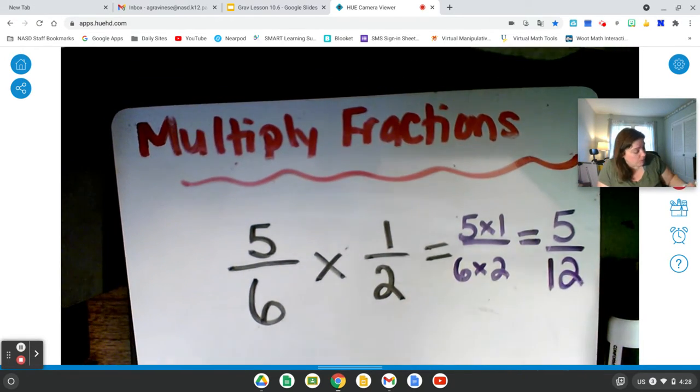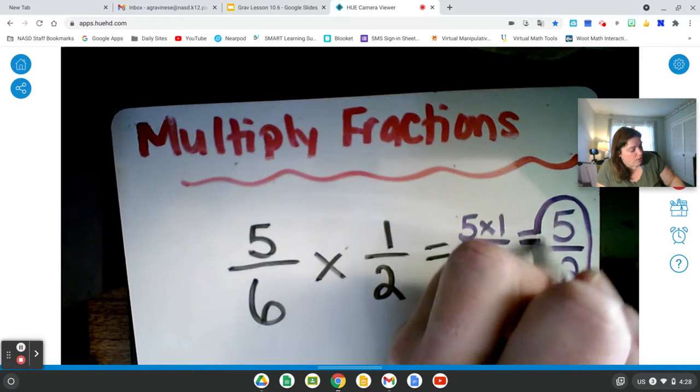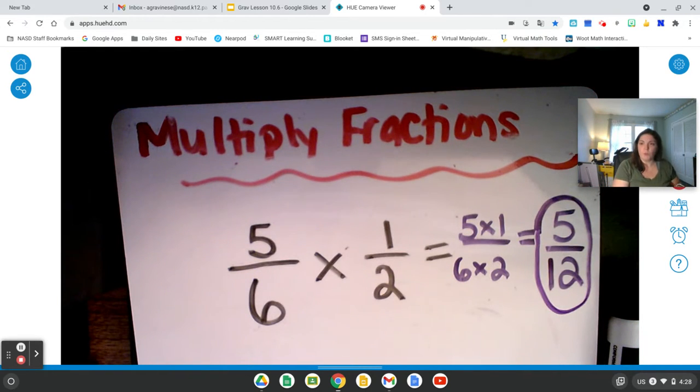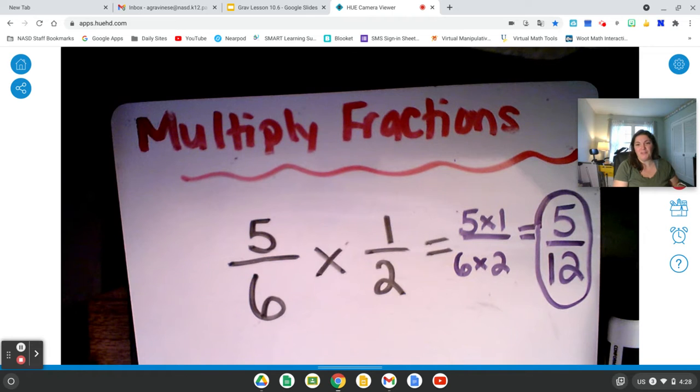5/12 is in simplest form because the GCF of 5 and 12 is 1. And that's it. That's how we multiply fractions.